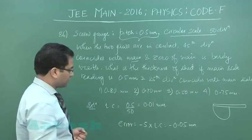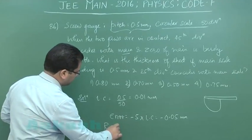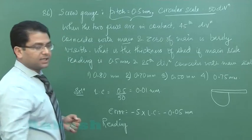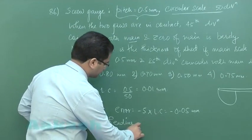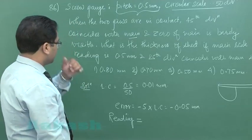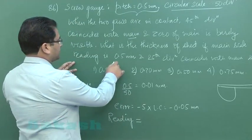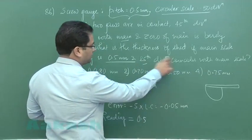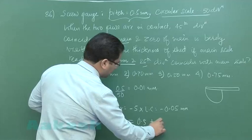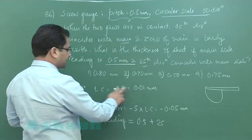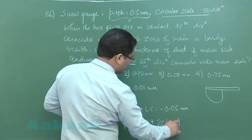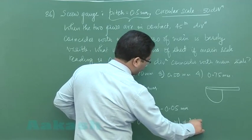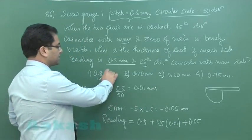Now let's see the reading. You could see here it's something like this: 0.5 millimeter on the main scale, and the 25th division coincides, so that will be 25 into least count which is 0.01. The correction should be plus 0.05. You add up all these things and eventually you get 0.80 millimeter as the exact reading.